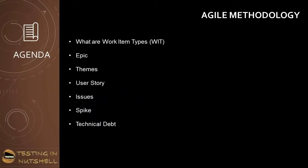In this tutorial, we will be understanding what are work item types: epic, themes, user stories, task, issues, spike, and technical debt.